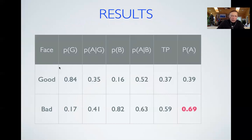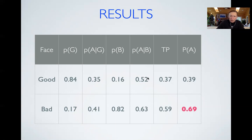Here are the results for the good-guy face: probability categorized as good = 0.84, probability of attack given good = 0.35, probability of bad = 0.16, probability of attack given bad = 0.52. The total probability comes out to 0.84 × 0.35 + 0.16 × 0.52 = 0.37. The decision-alone probability comes out very close at about 0.39 — a small 2% difference. For the bad-guy face: probability of good = 0.17, attack given good = 0.41, probability of bad = 0.82, attack given bad = 0.63. Total probability = 0.17 × 0.41 + 0.82 × 0.63 = 0.59.